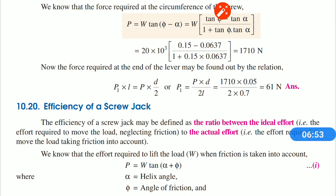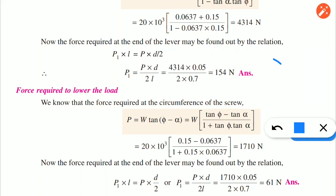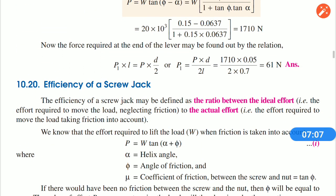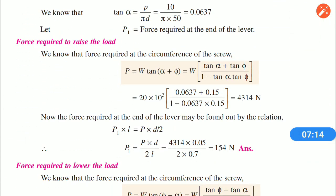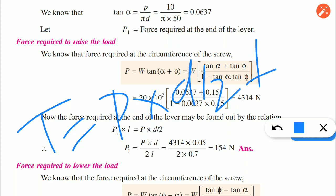If you have a lower force, it is less than 61 N. If you have a raising force, it is 150 N. So the lower force is less than the raising force, which makes sense. If we include the collar friction with two mu values, we have the formula T equals P into D by 2 plus mu1·W·r.